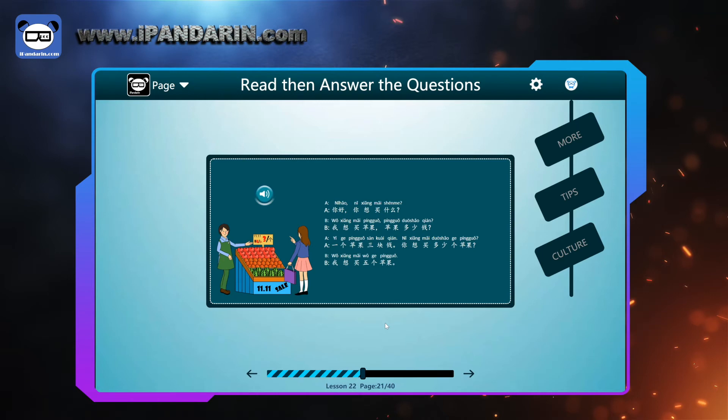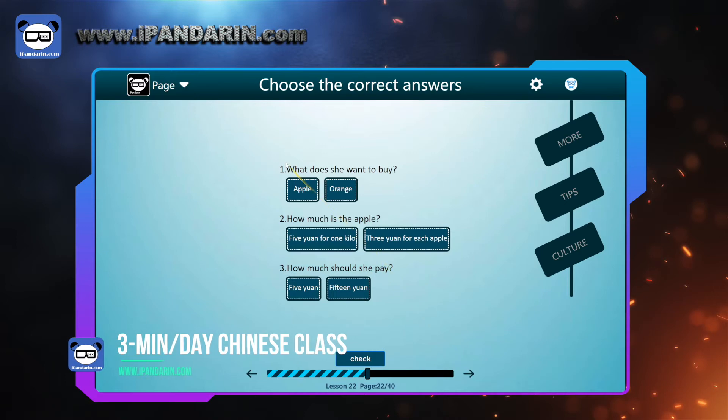Let's do one reading exercise. Questions. First, what does she want to buy? Number two, how much is the apple? Number three, how much should she pay?